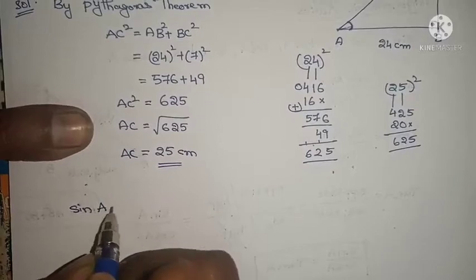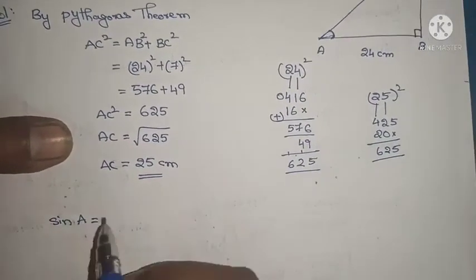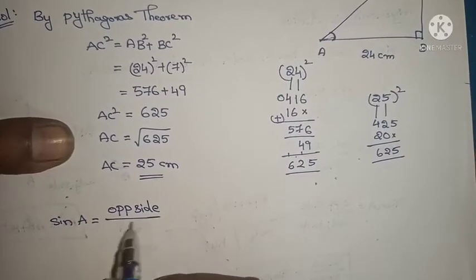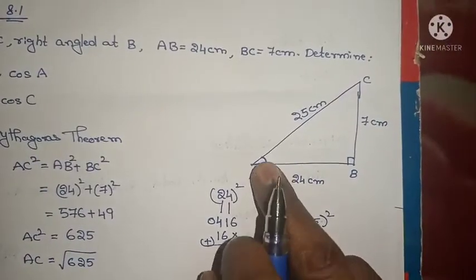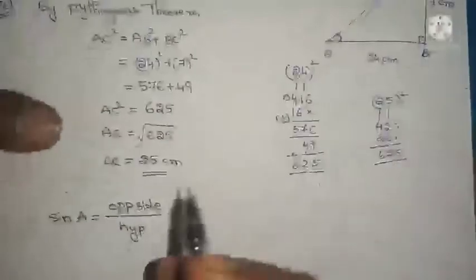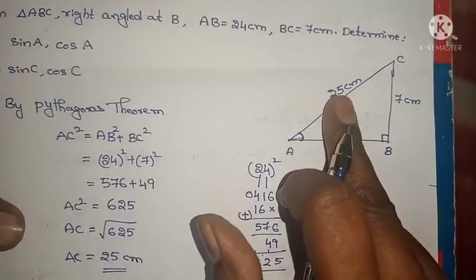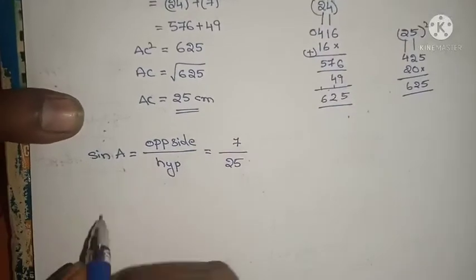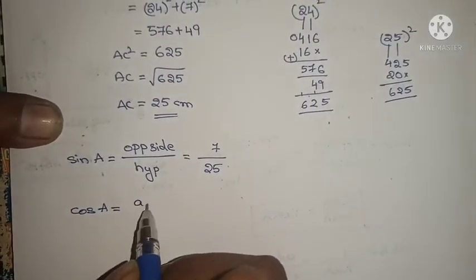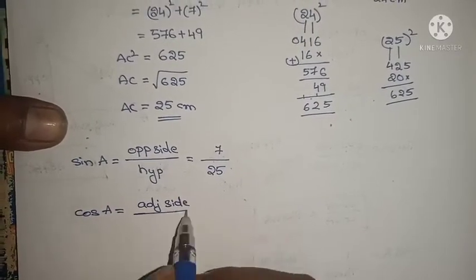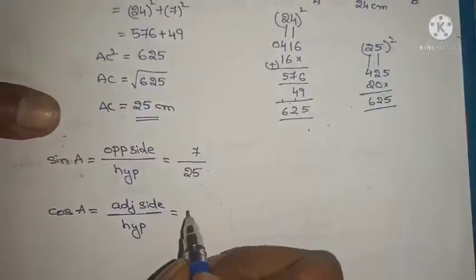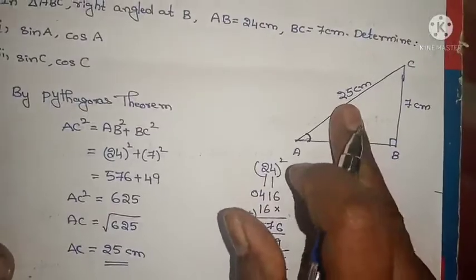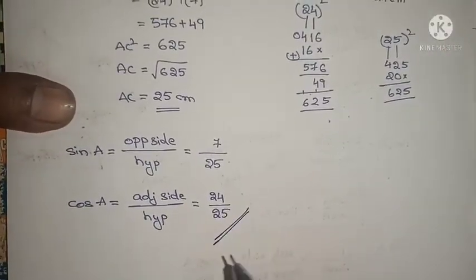Now they asked for sin A. Sin A equals opposite side by hypotenuse. For angle A, the opposite side is BC = 7, and the hypotenuse is AC = 25. So sin A = 7/25. Similarly, cos A equals adjacent side by hypotenuse. For angle A, the adjacent side is AB = 24, and hypotenuse is 25. So cos A = 24/25.